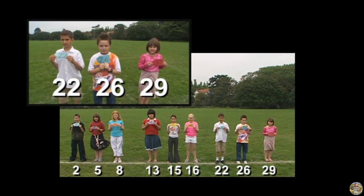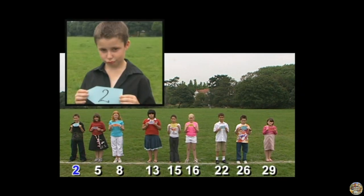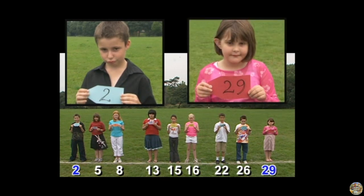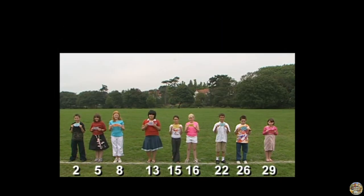Then we do the twenties. And now we can see them all in order. We can easily see whose balloon travelled the shortest distance, and whose balloon travelled the furthest. All the numbers have been put in order by looking closely at their digits.